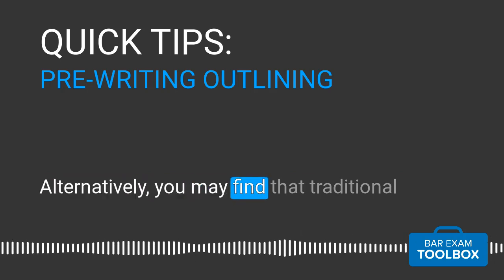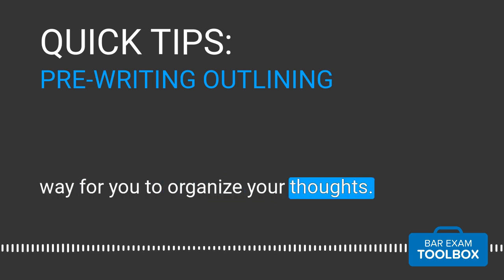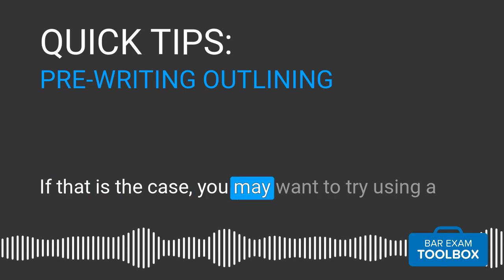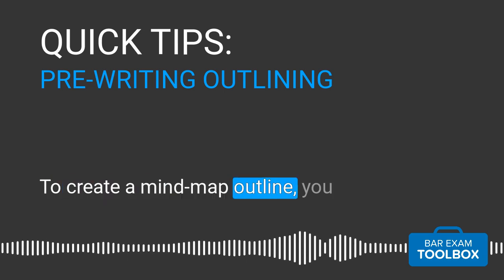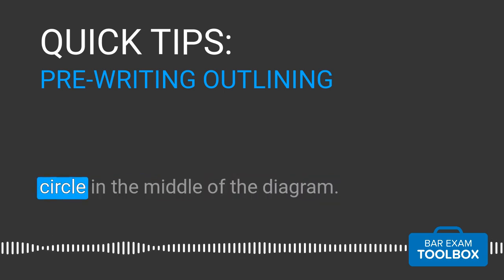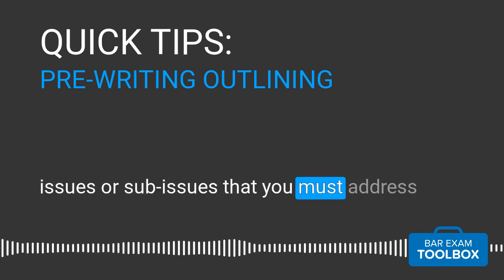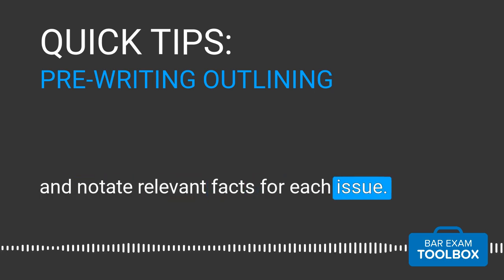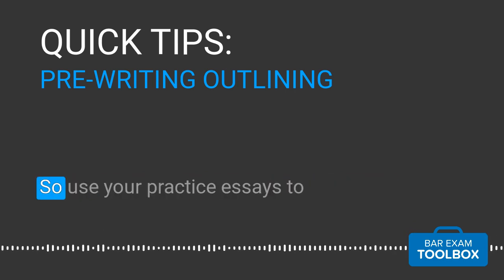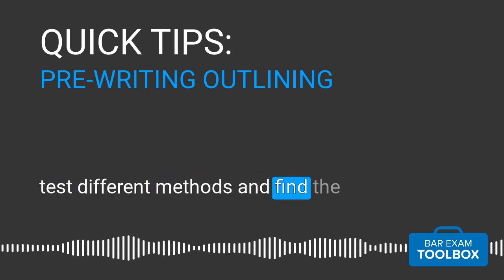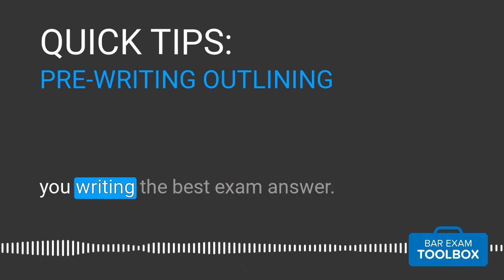Alternatively, you may find that traditional outlining, whether on scratch paper or on the computer, is not the best way for you to organize your thoughts. If that is the case, you may want to try using a diagram, or what we call a mind map outline. To create a mind map outline, you will start with a major issue in a circle in the middle of the diagram, then draw branches out to related issues or sub-issues that you must address, and notate relevant facts for each issue. As with everything in bar prep, there is no one-size-fits-all approach, so use your practice essays to test different methods and find the one that works best for you.